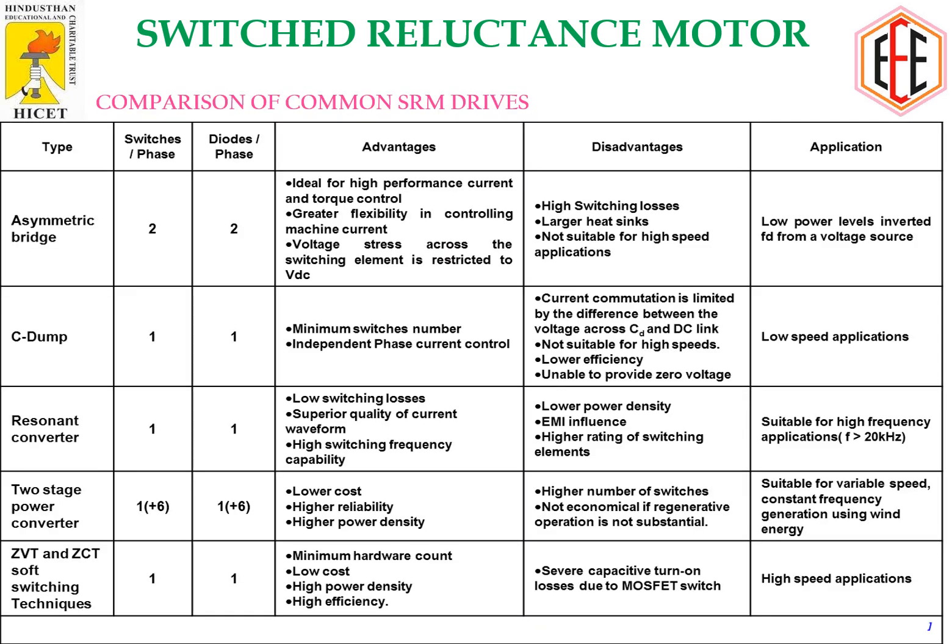For a comparison of SRM drives, we use a number of converters such as the asymmetric bridge converter, C-dump (CDM) converter, resonant converter, two-stage power converter, and also ZVT and ZCT — that is, zero voltage transition and zero current transition soft switching techniques. Depending on whether the application is low power, low speed, or high speed, we choose the appropriate controllers and converters.